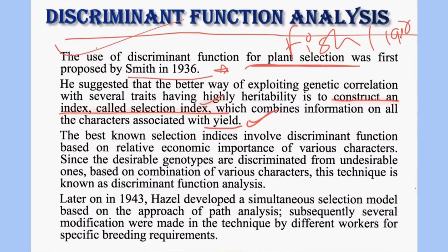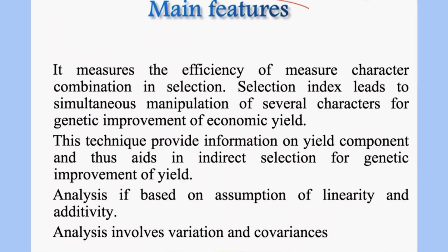Later in 1943, Hazel developed a simultaneous selection model based on the approach of path analysis. Many scientists came and, with modifications in path coefficient analysis, developed different techniques for specific breeding requirements. The purpose of discriminant function is to discriminate individuals that belong to different populations.